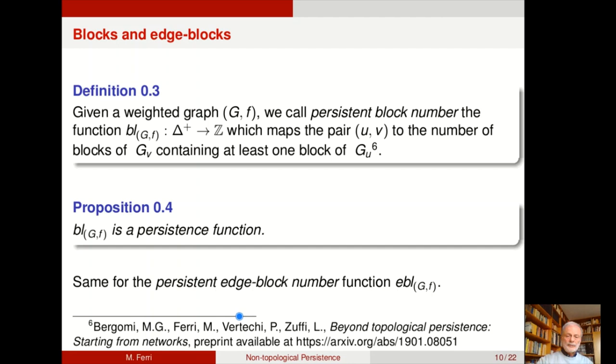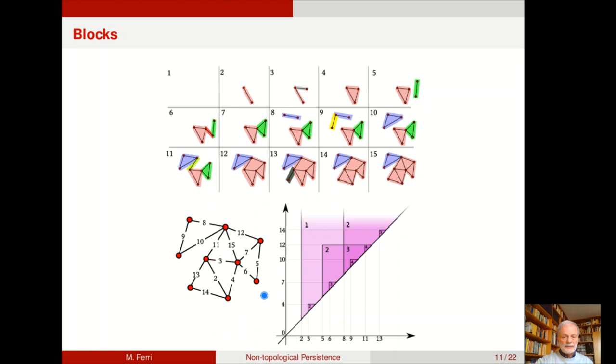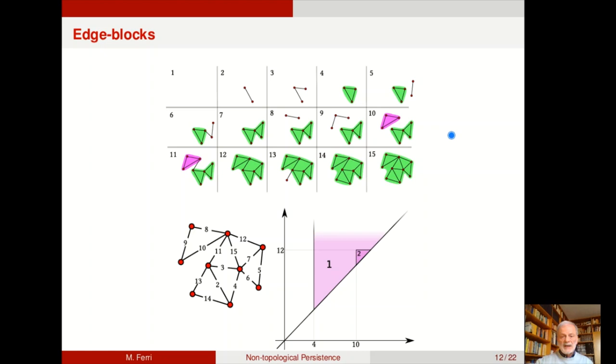And the same thing if you are interested in edge blocks, we can build a persistent edge block number function, which is also a persistence function. If we take the same weighted graph as before, we see a quite different picture, of course, because now we are interested in the evolution of blocks through the filtration. And again, a different picture if we are interested in the evolution of edge blocks.